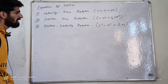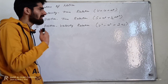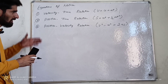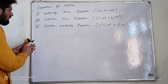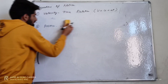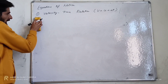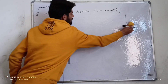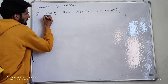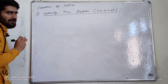This seems to be difficult but it is easy. We are going to derive these equations one by one. The first one is the velocity-time relation, that is, we will derive v is equal to u plus at.